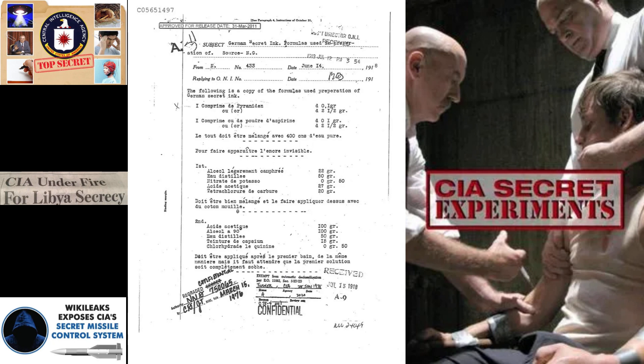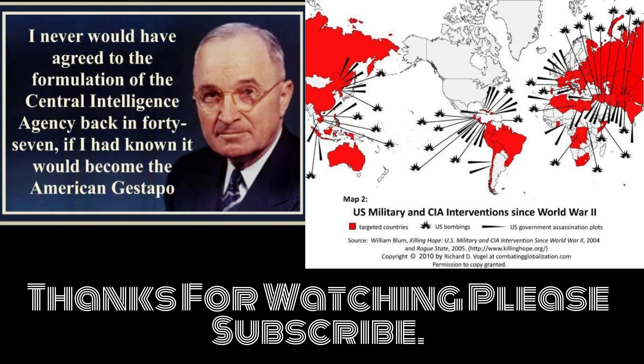The Central Intelligence Agency, established in the aftermath of World War II, has played a critical role in shaping the United States' foreign policy and national security strategies. While its origins and purpose are rooted in the need to address the challenges of the Cold War, its controversial connections to Nazi Germany shows the average citizens how far the government will go for information and power. If you liked the video, please be sure to like and subscribe.